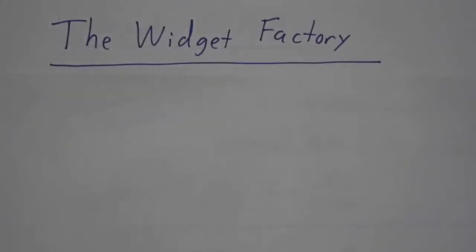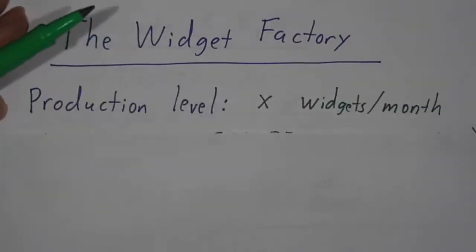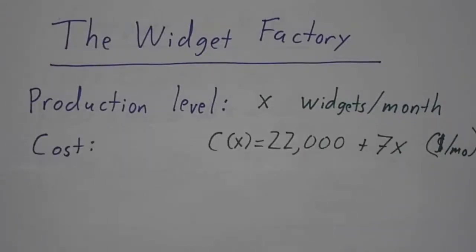As an example of optimization, we're going to revisit the widget factory and see if we can make it profitable. This is a factory that produces X widgets a month, and the cost of producing X widgets is $22,000 plus 7X.